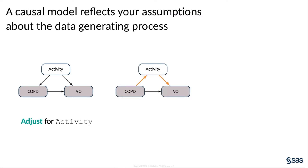For example, it might make more sense to view activity as a mediating construct rather than as a confounder. That is, individuals with COPD are less likely to be active, which in turn decreases VO2max. Under these assumptions, it would be a mistake to adjust for activity, because doing so would block the part of the causal effect that is attributable to the mediating pathway.